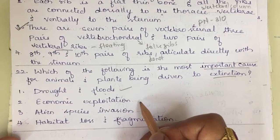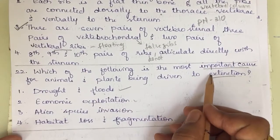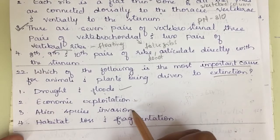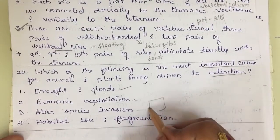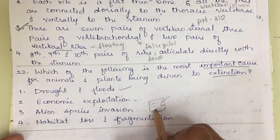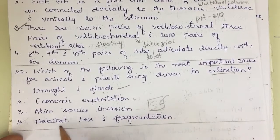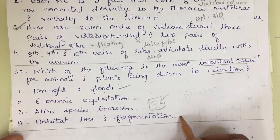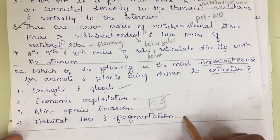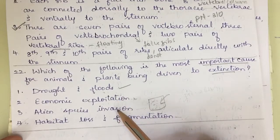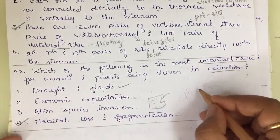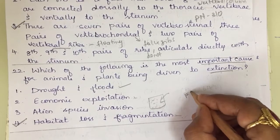Alien species invasion is also a cause for extinction, typically affecting smaller areas when a new species enters a region and displaces existing ones. However, habitat loss and fragmentation is the most important cause, as forests are home to many animals, and when they are fragmented, large-scale extinction occurs. The correct answer is habitat loss and fragmentation. This question is from second year, page number 264.